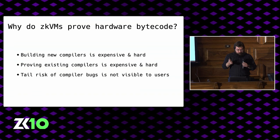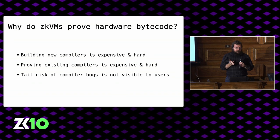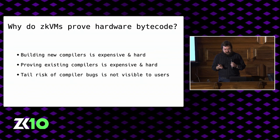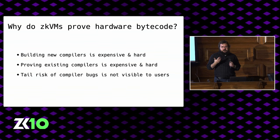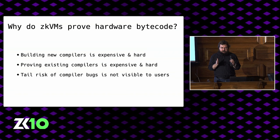So why do ZKVMs only prove hardware bytecode? Because building new compilers and infrastructure is hard and expensive. Proving existing compilers is hard and expensive. The tail risk of these bugs isn't really visible or punished in the market. When building general-purpose VMs, it seems reasonable to reuse mature existing compiler infrastructure. We can't generate proofs of compilation yet, but eventually we might. And furthermore, if we're doing this work, our part of the stack is fine — it's the compiler's fault if it generated bad code. The RISC-V ZK backend is working as it's supposed to.